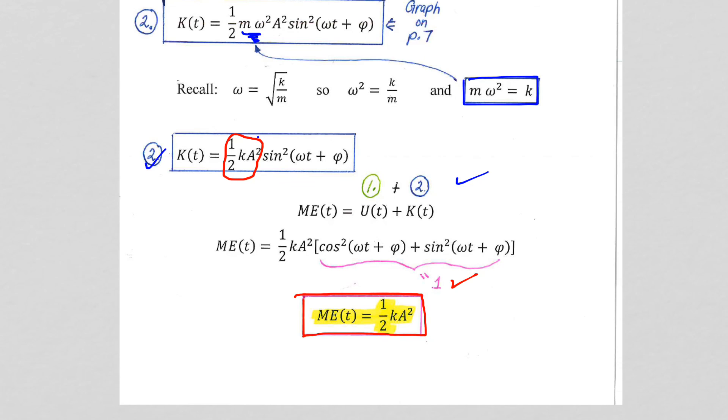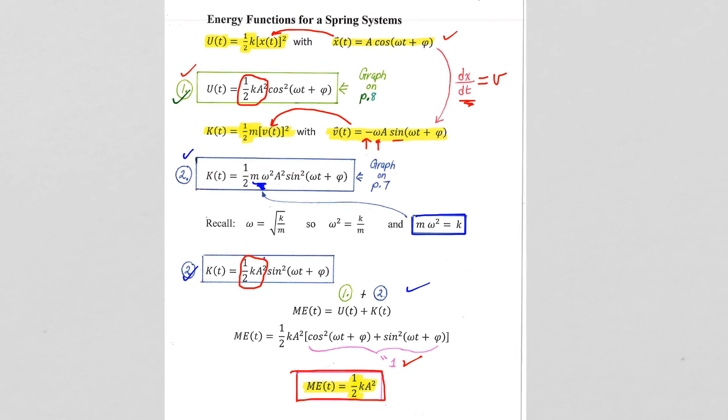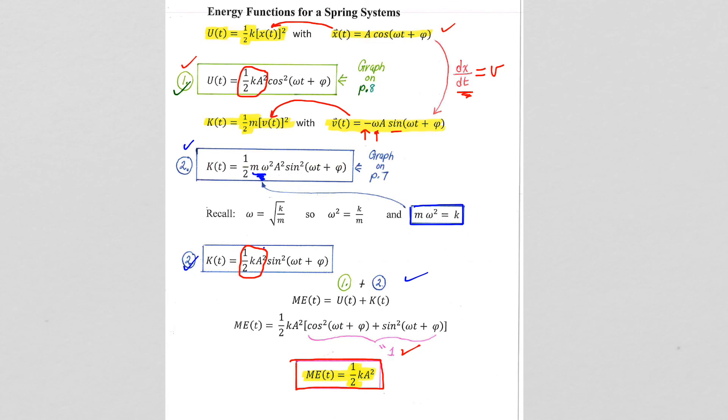So, even when we use one-half k x squared, and we plug it into our known equations, we get the result that we need to get because that's how the block oscillator works.